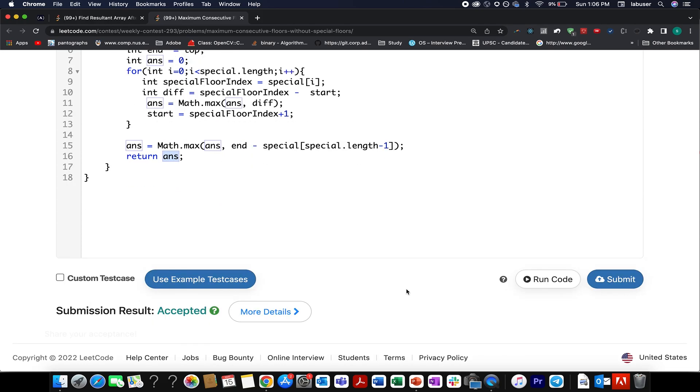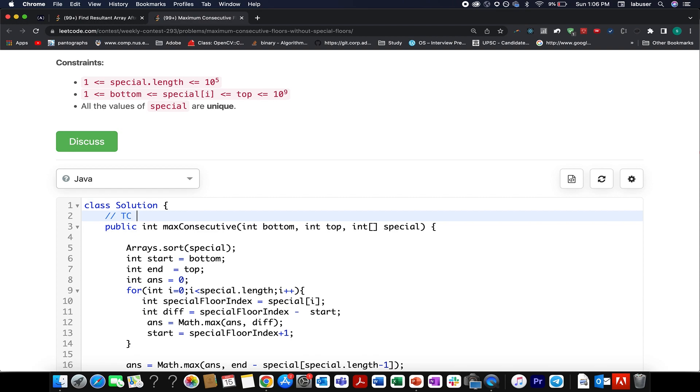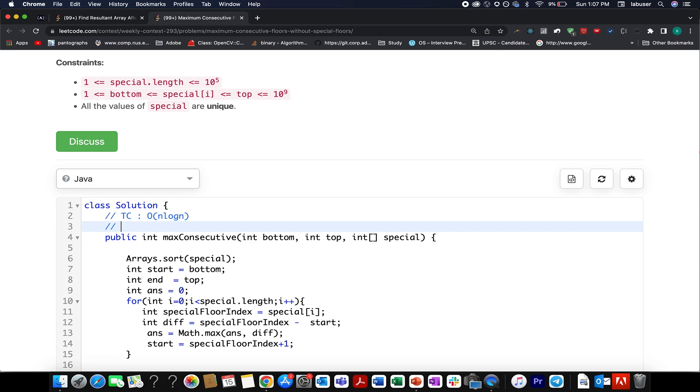Accepted. The time complexity of this approach is of order of n log n. Why n log n? Because we are sorting the special array. Had this not been there, it would have been equal to order of n. And the space complexity is constant time. We are not using anything extra.